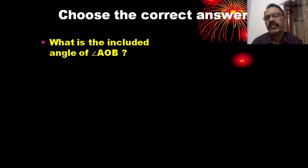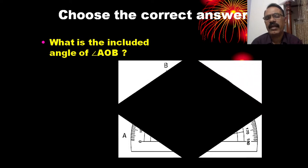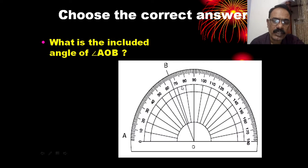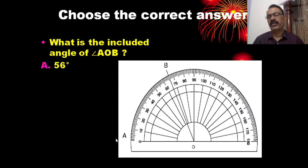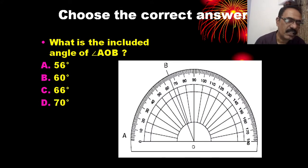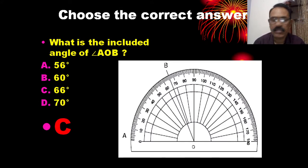Looking at the diagram: point A, center point O, and point B are marked. The angle shown is 66 degrees. The options given are 56 degrees, 60 degrees, 66 degrees, and 70 degrees. The correct answer is 66 degrees.